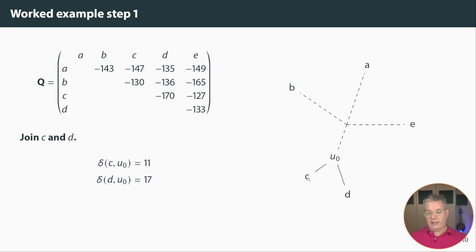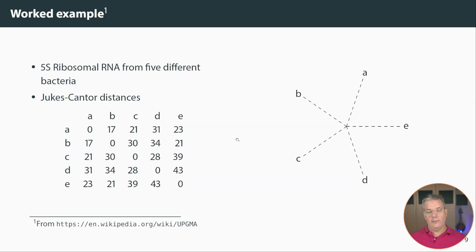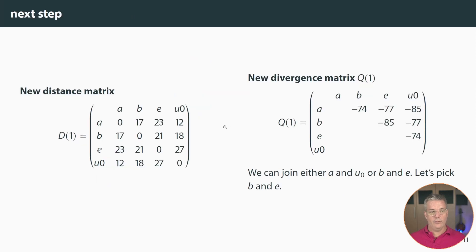Now we've calculated that part but we still have to calculate the new distance matrix and we do that using this formula here. We drop the C and D row and column and we add in a U0 row and column and we get something like this. Well we get this. This is this new distance matrix. Here on the left and from that we then calculate a new divergence matrix. So this is now Q. I'm going to call it Q1 in the first round of this.